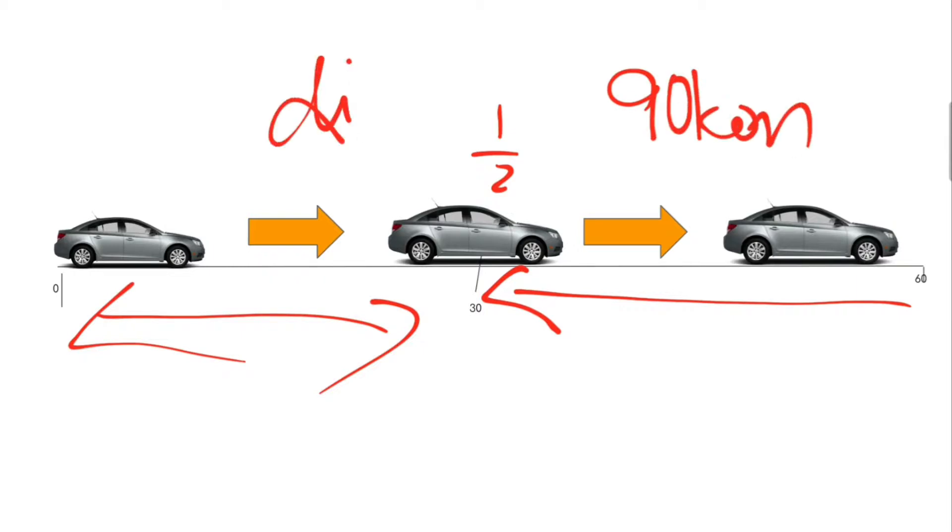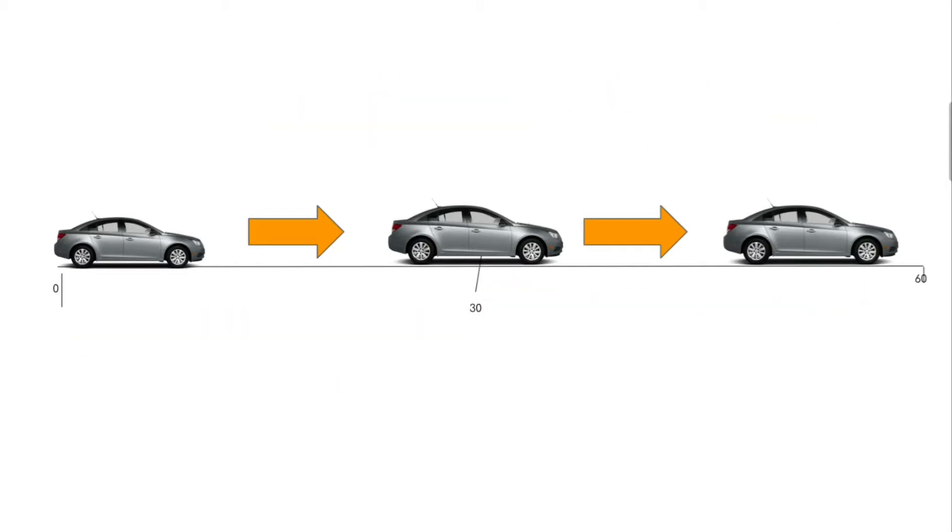So this car has traveled 90 km - distance is equal to 90 km. So if you consider distance as displacement, you are wrong. The displacement of the car is 30.